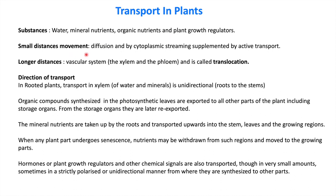For short distance movement, plants use diffusion and active transport mechanisms. For longer distances, plants have a vascular system in their body created by xylem and phloem. The process by which transportation occurs through xylem and phloem is called translocation. In rooted plants, transportation in xylem is unidirectional — from root to stem — carrying water and minerals.